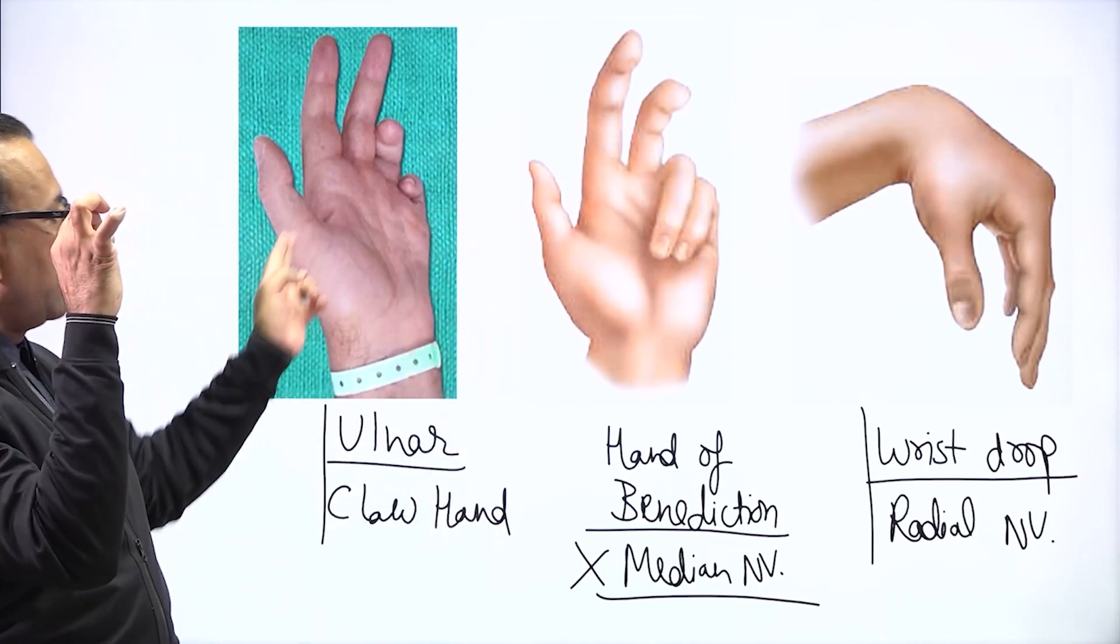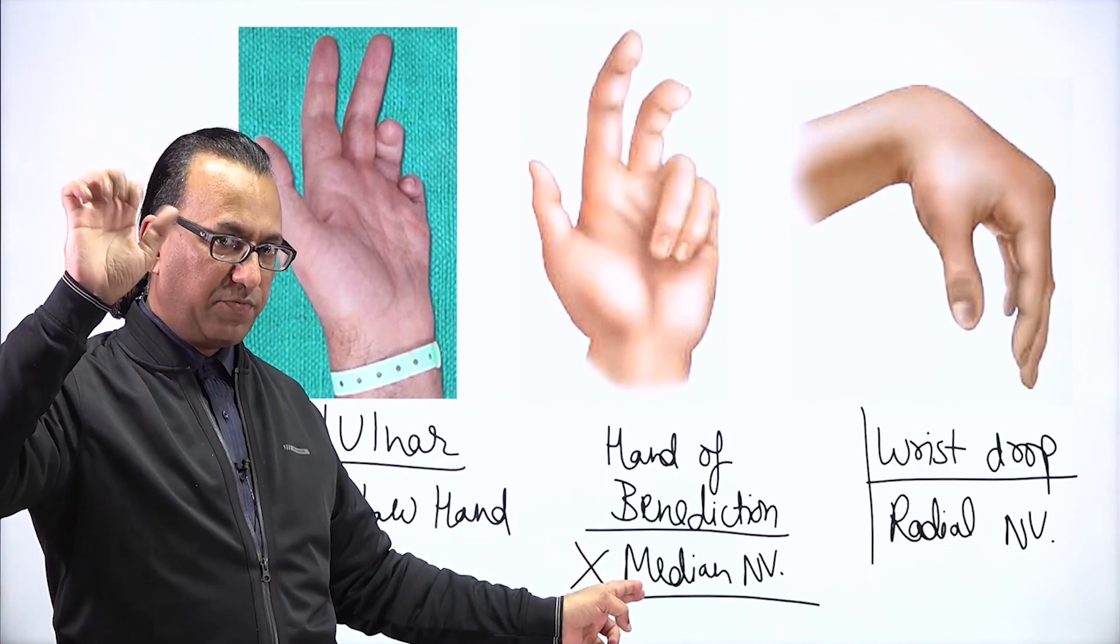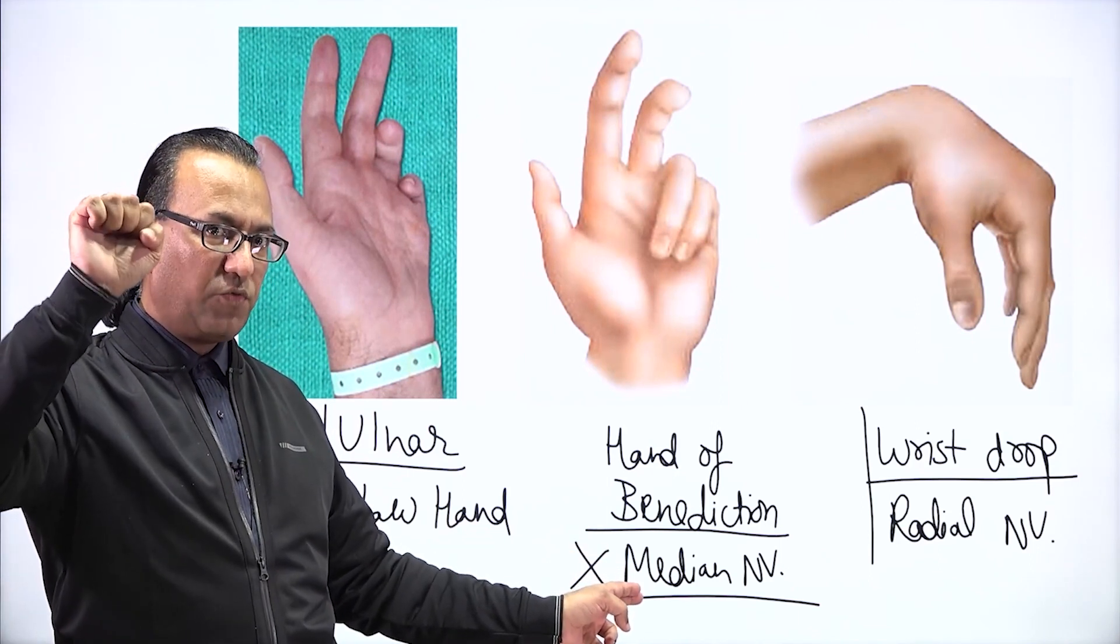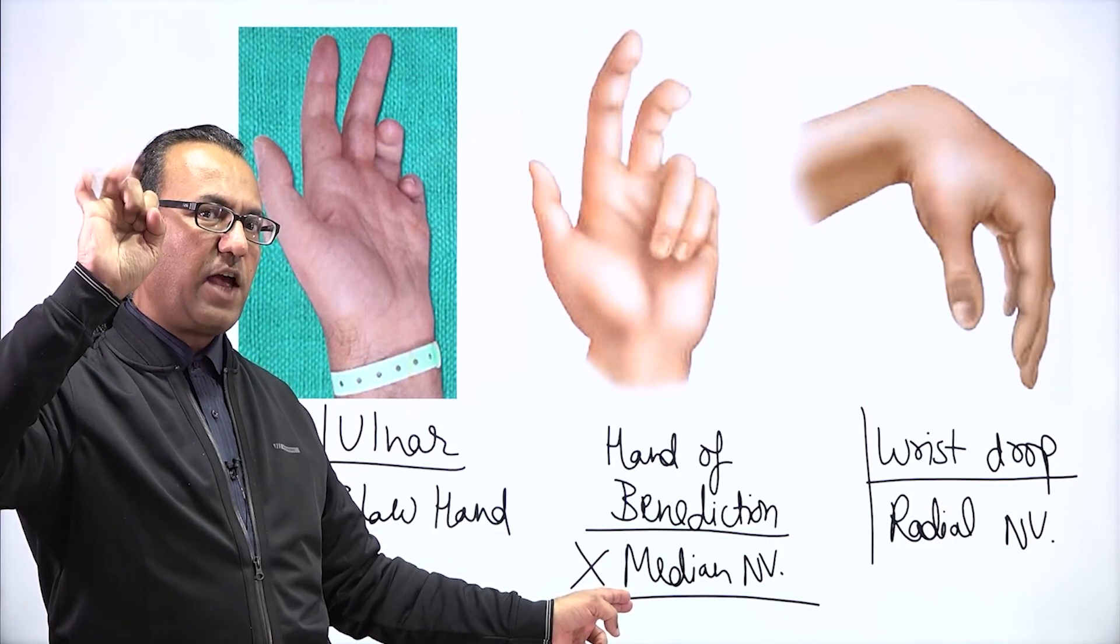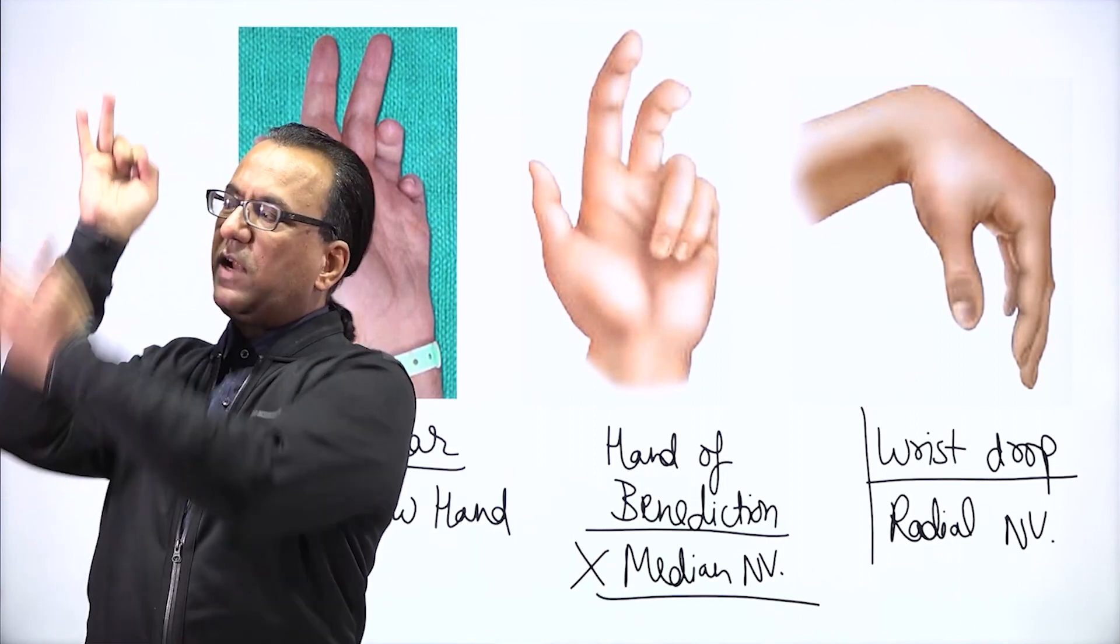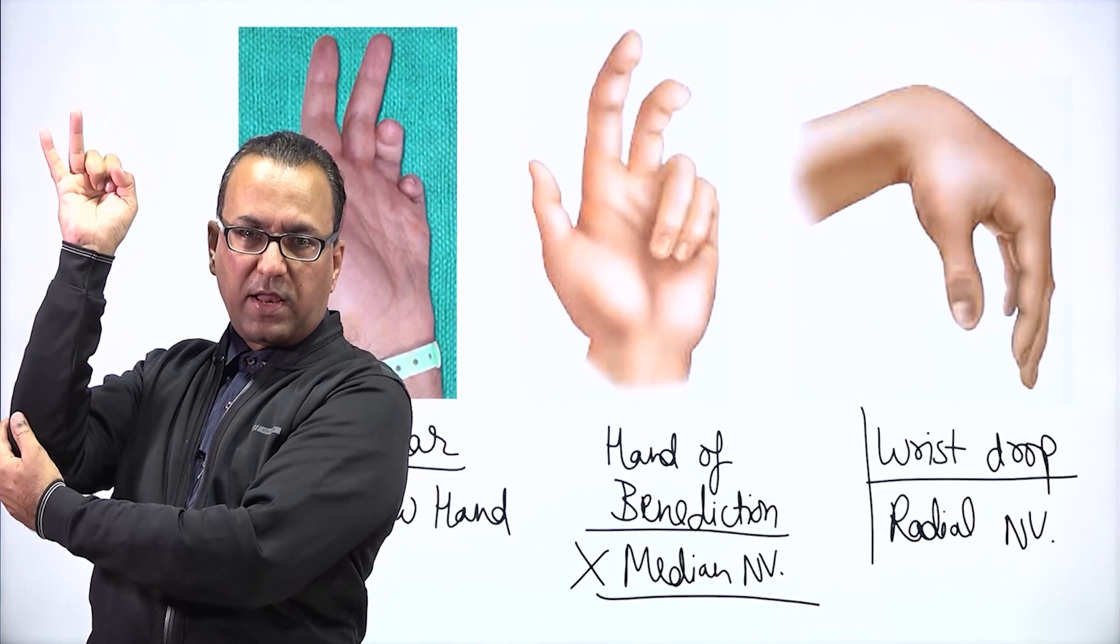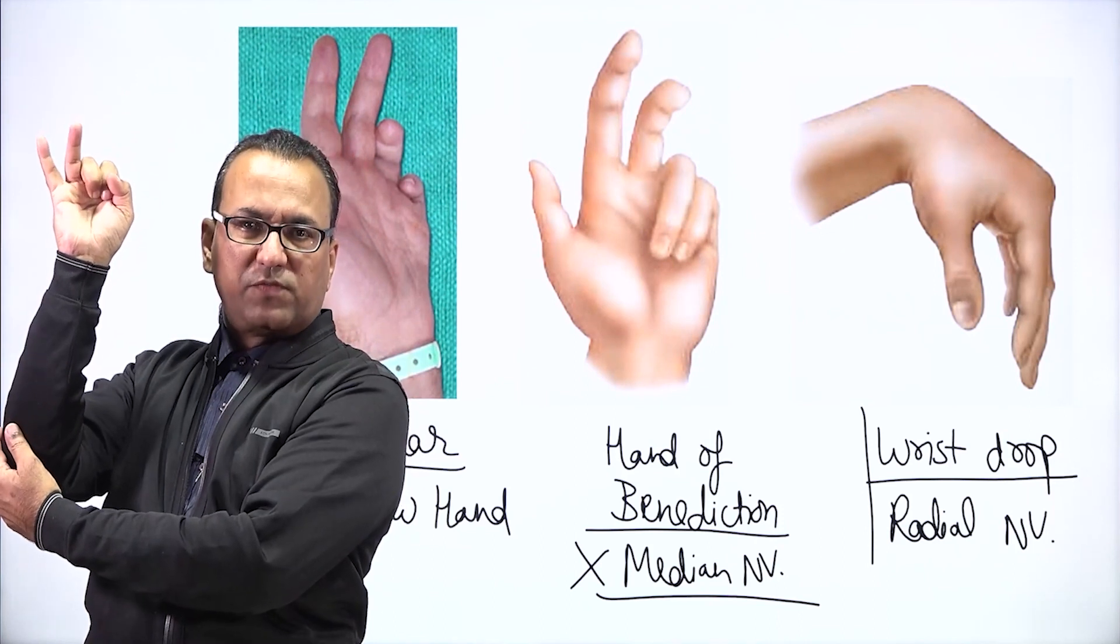As compared with the hand of benediction, here you have to tell the patient make a fist. And while making a fist, you will find these two fingers they are able to fold, because the medial half of flexor digitorum profundus supplied by ulnar nerve is still working.